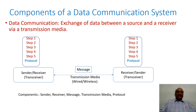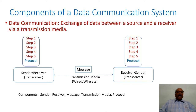At one end of the location, you have a sender which is sending data using a transmission media to the other end. At the other end, we have a component called receiver which receives the data and gives the necessary information to the corresponding user. The receiver at the other end can also act like a sender, transmitting data back, while the other end has a receiver to process the information communicated across this medium.